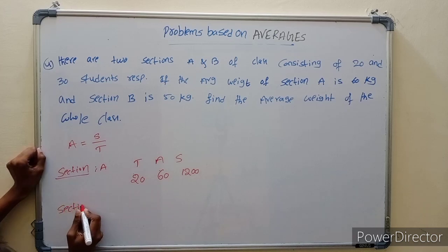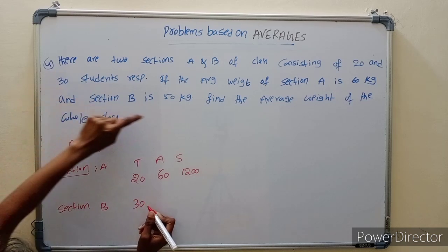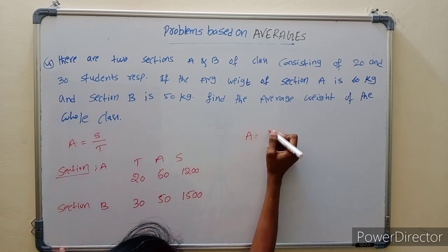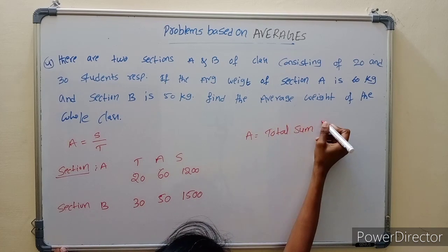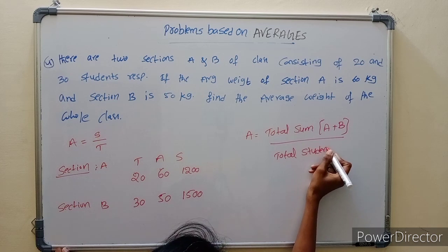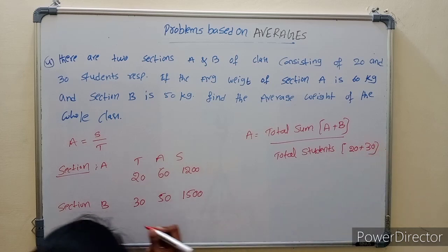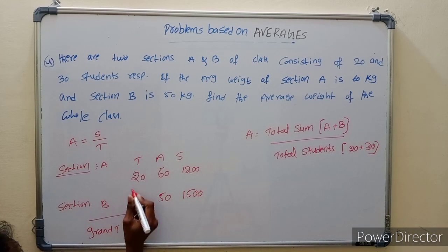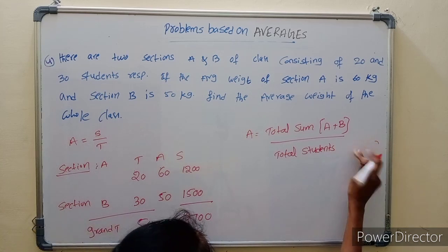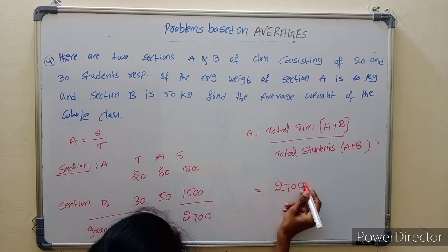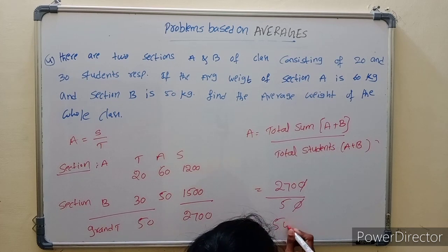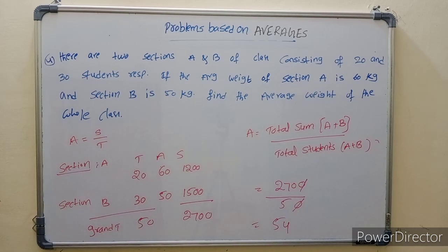Section B total is 30 students, average weight is 50 kg, so total sum is 1500 kg. Total average equals total sum divided by total students. Grand total students equals 20 plus 30 equals 50. Grand sum equals 1200 plus 1500 equals 2700. Average equals 2700 divided by 50 equals 54 kg.